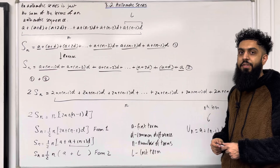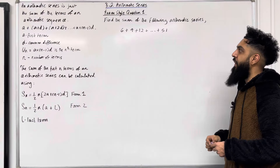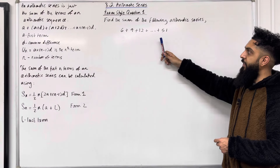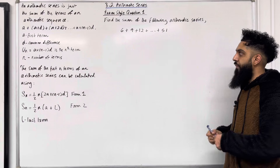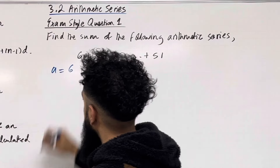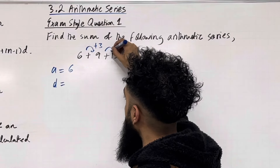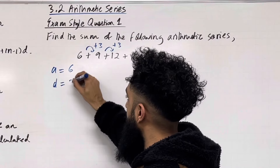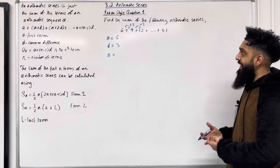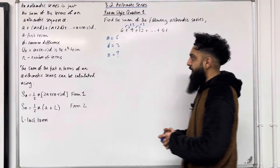I'm going to apply these key facts to exam style questions. Here is exam style question 1: find the sum of the arithmetic series 6 plus 9 plus 12 plus dot dot dot plus 51. Firstly, the first term A is equal to 6, and the common difference D is equal to 3 — we're adding 3 each time. The number of terms N is not given, so I need to calculate it.